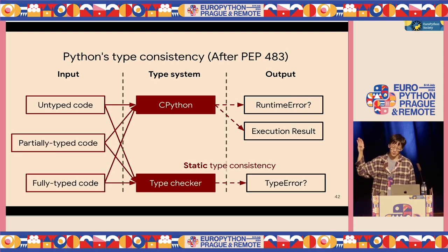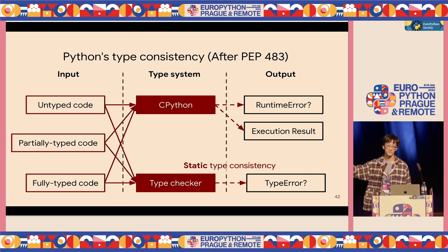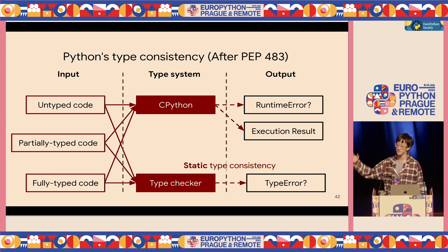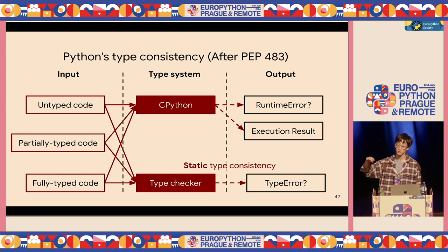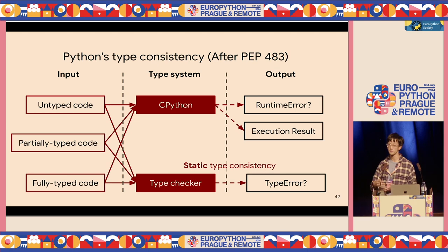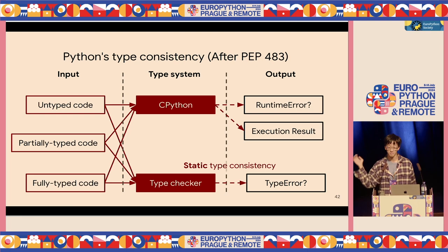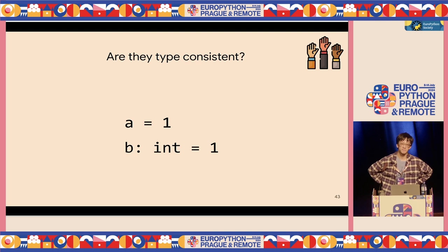After PEP 483, we have type checkers as an additional layer — the input can now be partially typed or fully typed. CPython interpreter is still a type system doing runtime checks. Type checkers additionally do the same check but statically. The difference is CPython executes your code, while a type checker just scans it without running it — useful if, for example, your program transfers money between banks and you only want to check type consistency.